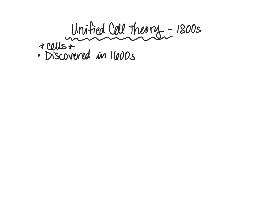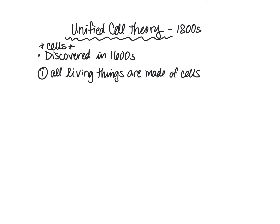The unified cell theory has three statements to it. The first statement is that all living things are made of cells. Now some living organisms are made up of single cells, and we call those unicellular.